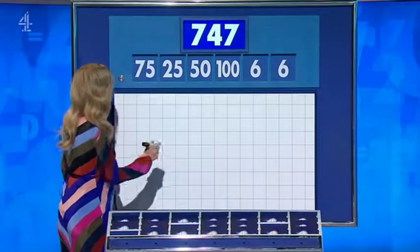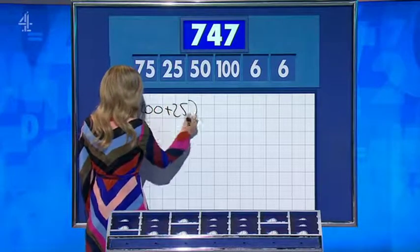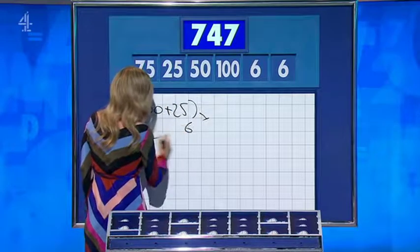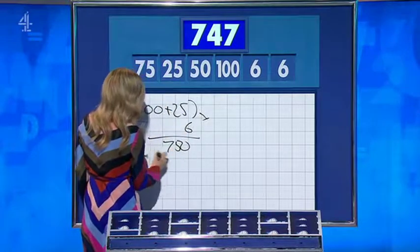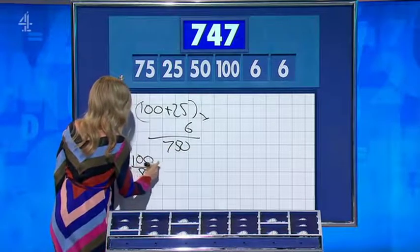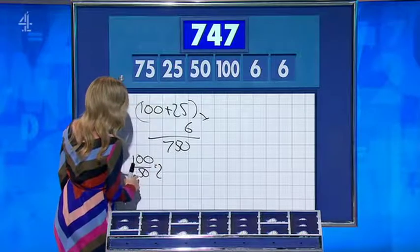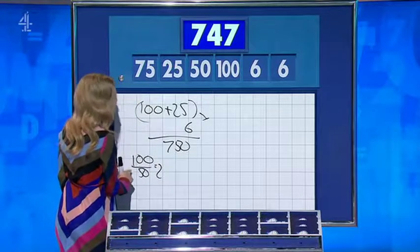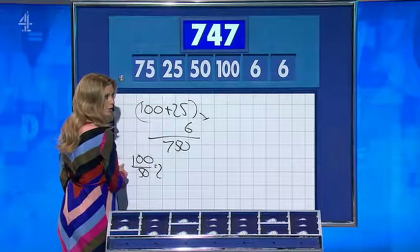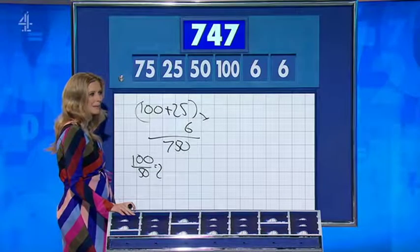So let's go with you then. One hundred plus twenty-five — one, two, five — times by six: seven fifty. And then one hundred divided by fifty is two. Yeah. Six over two is three. Oh sorry, sorry. You've used the hundred. Sorry. Fifty over... I'm sorry, I think it's going to be times up on this one.